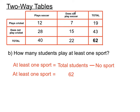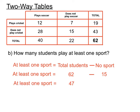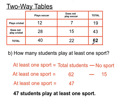People who don't play either sport are in the column 'do not play soccer' and the row 'do not play cricket' — that's the 15. We subtract that from the total because everyone else plays at least one sport if not two. So 47 students play at least one of these two sports. We could also get the same answer by adding 12, 7, and 28 to get 47.